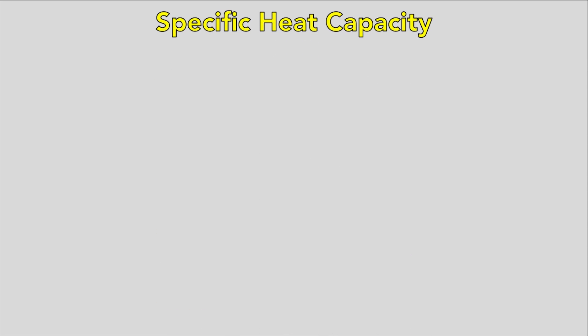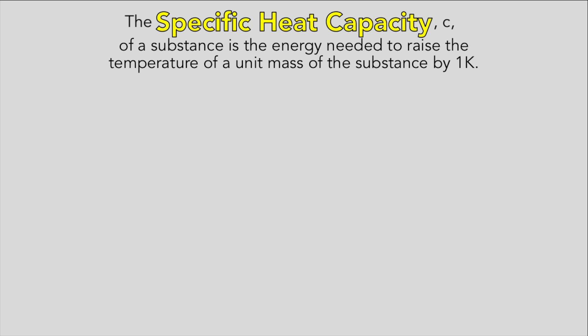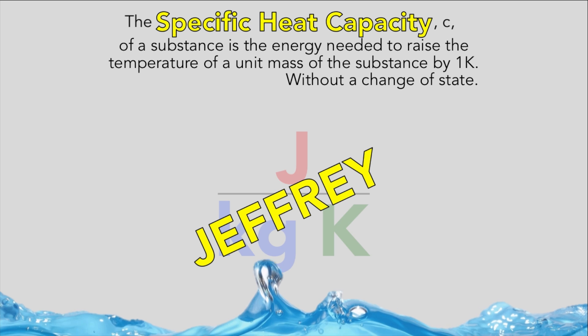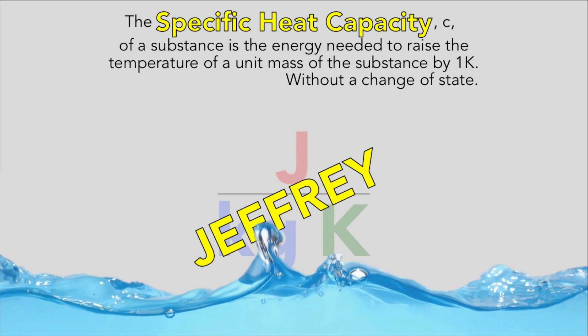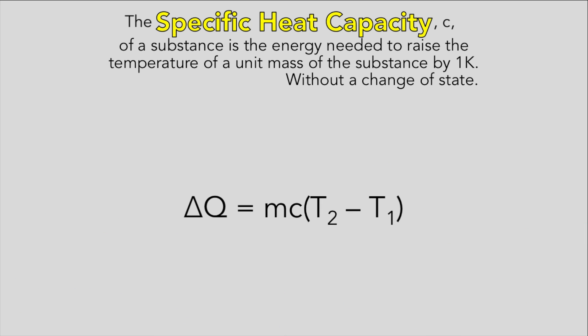Specific heat capacity now. Changing the temperature of an object depends on its mass, energy supplied to it, and the substance it's made from. The specific heat capacity, C, of a substance is the energy needed to raise the temperature of a unit mass of the substance by one Kelvin without a change of state. The unit is joule per kilogram per Kelvin. For water, it is 4,200, which you should probably know. To raise the temperature of mass M from temperature T1 to T2, the energy needed delta Q is given by MC multiplied by T2 minus T1. There are ways to measure specific heat capacity in liquids and gases, so have a glance at that in the textbook, but we're not mentioning it because it's so long. You don't need us for everything.